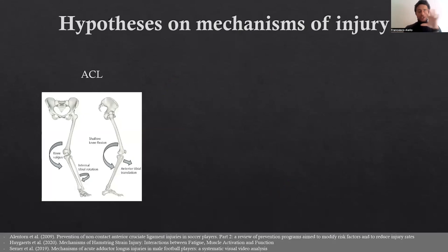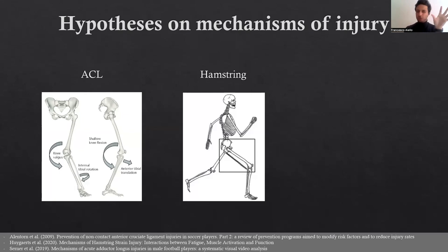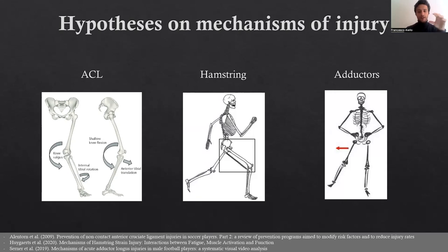Let's touch very quickly on what are the current hypotheses on the mechanism of the most frequent injuries in football. For ACL injuries, the most common mechanisms are: a combination of knee valgus internal rotation, or knee flexed varus and external rotation, or knee hyperextension. Hamstring injuries have been categorized into two main mechanisms: the stretch type and the spring type. The stretch type is believed to occur mostly to the semimembranosus, while the spring type is more common and is believed to occur mostly to the long head of the biceps femoris. Lastly, adductor injuries are believed to occur with the knee flexed and the hip abducted.